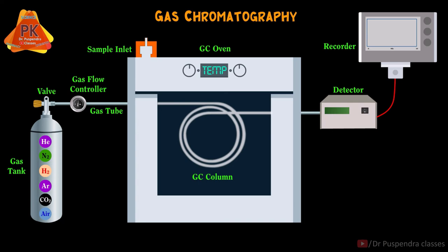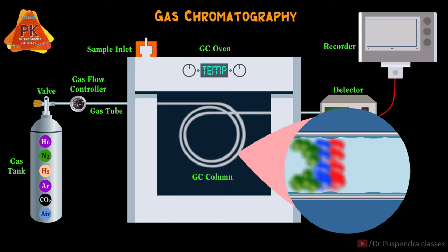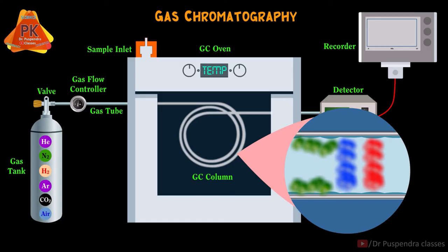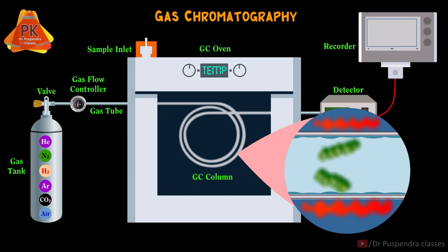When the vaporized or gaseous sample enters the column, separation starts according to the boiling point and size of the molecule. Low boiling point compounds and smaller size molecules will show higher affinity with the mobile phase and will probably elute out faster. Comparatively, higher boiling point compounds and larger size molecules will probably elute out later. Some compounds have very high boiling points and are not eluted under normal conditions.